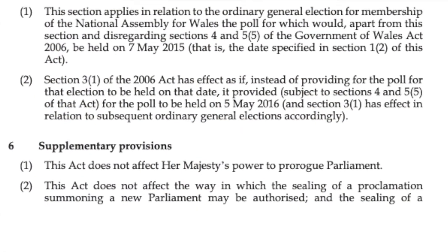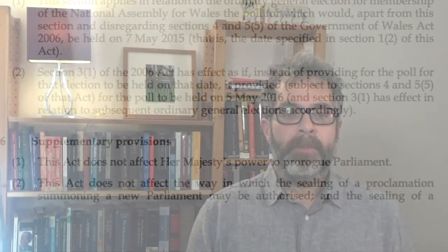Section 6, subsection 1 of the Fixed-Term Parliaments Act, however, states, this Act does not affect Her Majesty's power to prorogue Parliament. Prorogation is the temporary suspension of Parliament between sessions, in contrast with dissolution which ends the Parliament and precedes a general election. Anyway, prorogation is a continuing example of a power exercisable by Her Majesty but on ministerial advice. It was the exercise of this power of prorogation that was challenged in the case of the Crown on behalf of Miller and Prime Minister, Miller II as it has become popularly known, and I shall talk about that in a minute or two.